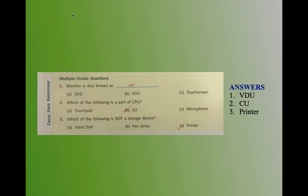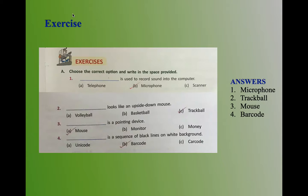Second question: Which of the following is a part of CPU? The answer is B, CU. CPU has three parts: CU, MU, ALU. Third question: Which of the following is not a storage device? The answer is C, printer. Printer is an output device.